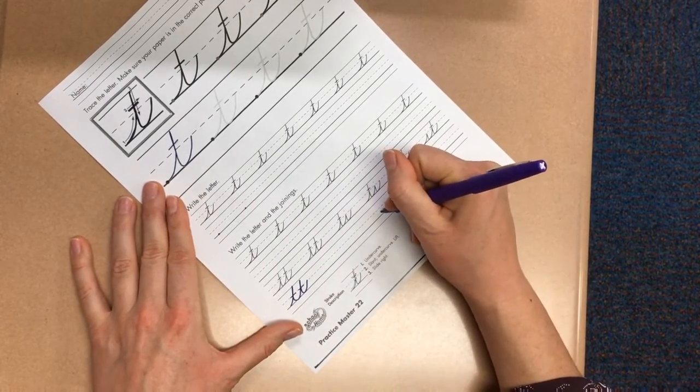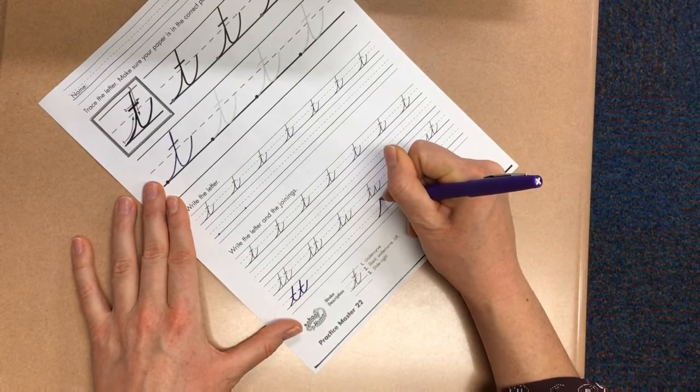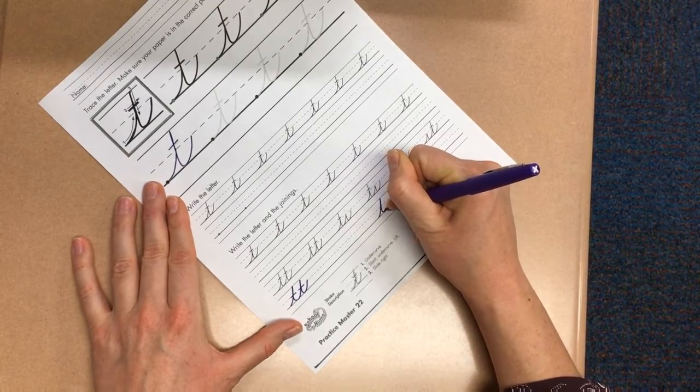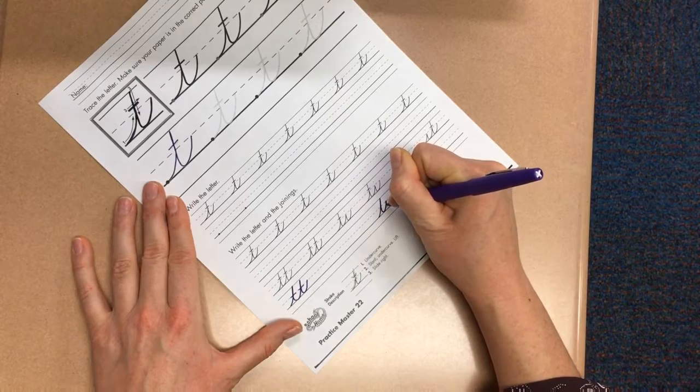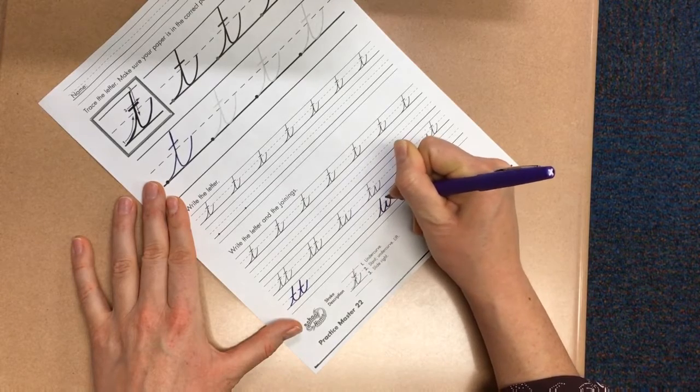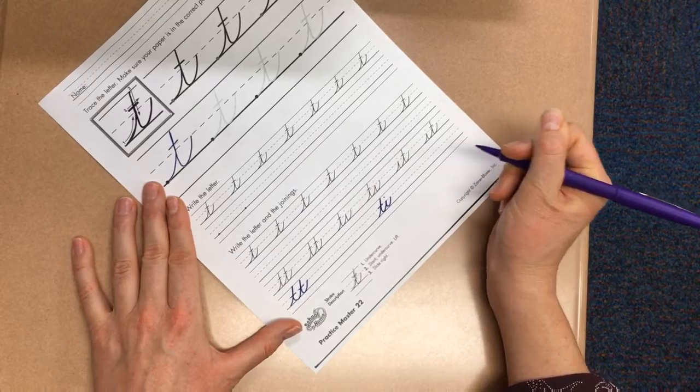We can also see that here with the T-I. I'm going to do my undercurve, my slant, my undercurve, my slant. Then I go ahead and I cross my T, and I dot my I.